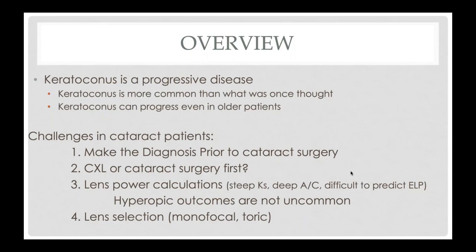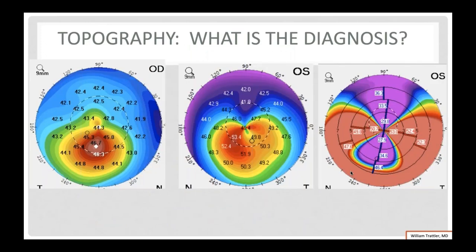There are some challenges in patients with cataracts who also have keratoconus. First, the important thing is to make the diagnosis preoperatively. I am a big fan of doing a screening topography prior to all cataract surgeries. I don't charge for this test, but it's helpful and I pick up a lot of patients. We'll discuss cross-linking or cataract surgery first, lens power calculations — which is definitely a challenging situation — and also when to choose monofocal versus toric IOLs.